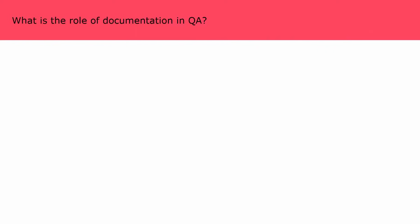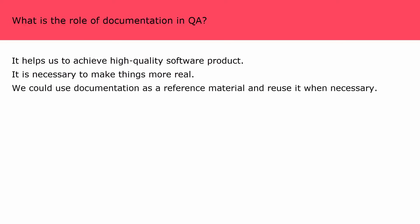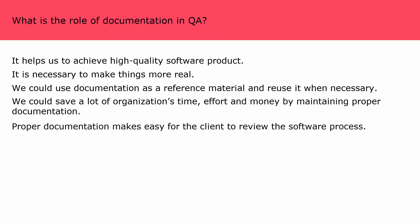What is the role of documentation in QA? Documentation plays a vital role in quality assurance. All documents involved in SDLC — such as business requirement specifications, designs, inspection reports, configurations, code changes, test strategy, test plans, test cases, bug reports, and user manuals — should be documented. Documentation helps achieve high quality software, serves as reference material, saves the organization's time, effort, and money, and makes it easy for the client to review the software process.